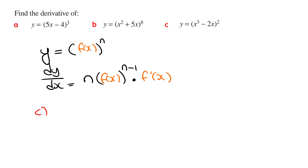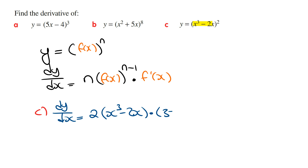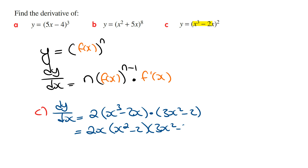Part c: y is equal to x cubed minus 2x squared. dy/dx using the shortcut method is going to be 2 times (x cubed minus 2x) raised to the power of 1, multiplied by the derivative of the inside function, which is 3x squared minus 2, giving us dy/dx in one line. We can simplify this a little bit more by taking out x as a common factor from the first brackets, writing it in a cleaner way as 2x times (x squared minus 2) times (3x squared minus 2).